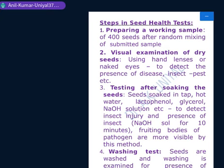The next step is to test the seeds after soaking. After soaking, there may be chemical or metabolic changes in the seeds. Seeds are soaked in tap water, hot water, lacto-phenol, glycerol solution, or NaOH solution to detect insect injury and presence. Notably, NaOH solution applied for 10 minutes will reveal the fruiting bodies of pathogens clearly on the seeds, which are then checked under a microscope.